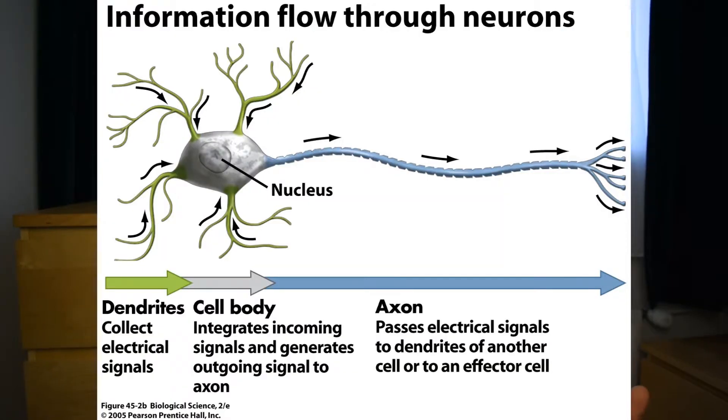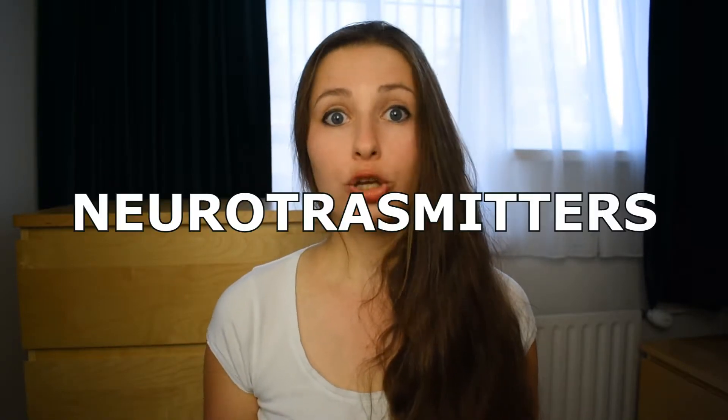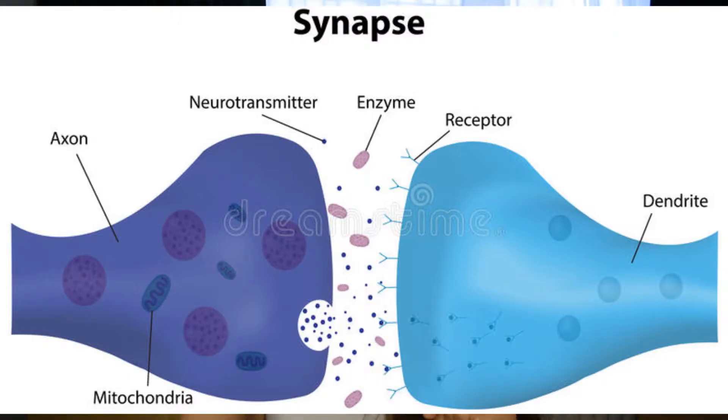Neurons have three basic parts: a cell body and two extensions called an axon and a dendrite. Dendrites look like branches of a tree and they receive messages for the cell, which are later transported through the axon. Neurons communicate with each other by sending chemicals called neurotransmitters across a tiny little space called the synapse, which takes place between the dendrites and axons.